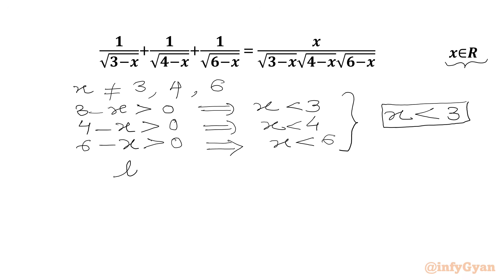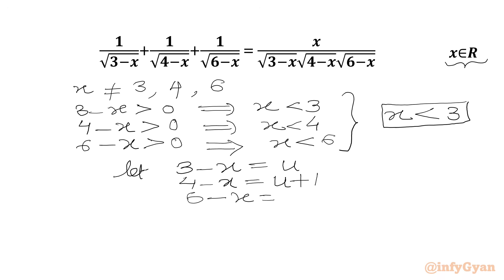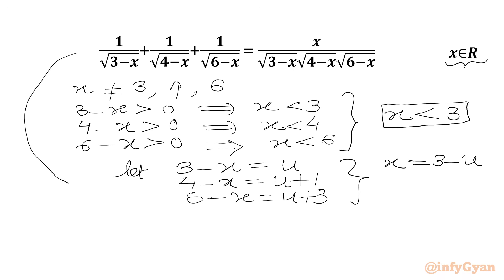Now we have to solve our equation. I will use the method of substitution. Let us say 3 minus x is equal to u. So 4 minus x will be u plus 1 and 6 minus x will be u plus 3. From our substitution equation 3 minus x equals u, we get x equal to 3 minus u, which we have to apply in the RHS. So I will write our equation in terms of u now.